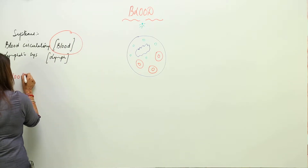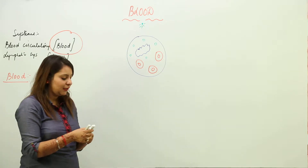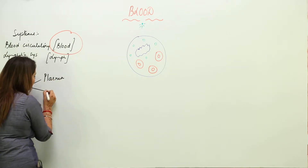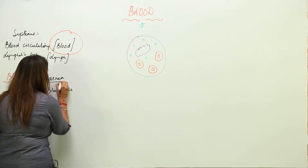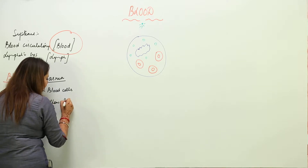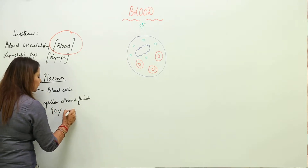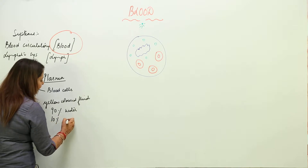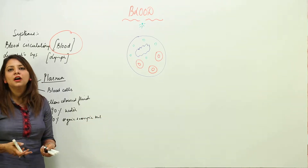The circulating fluid in the blood circulatory system is blood. Blood is formed of two parts: one is plasma, and the other is blood cells. Plasma is the pale yellow colored fluid which has approximately 90% water, and the rest 10% consists of other organic and inorganic substances like hormones, enzymes, nutrients, proteins, and antibodies.